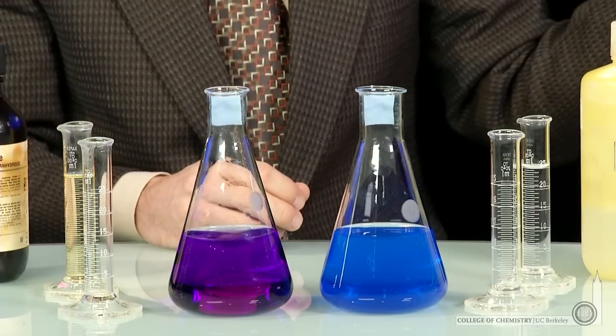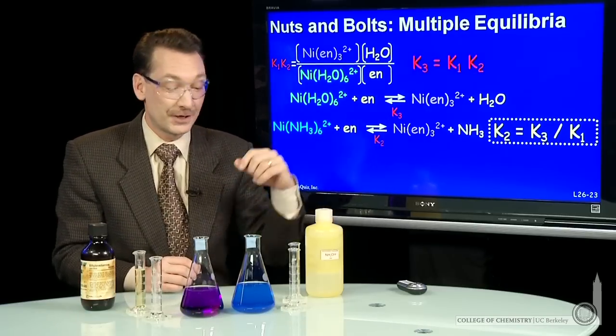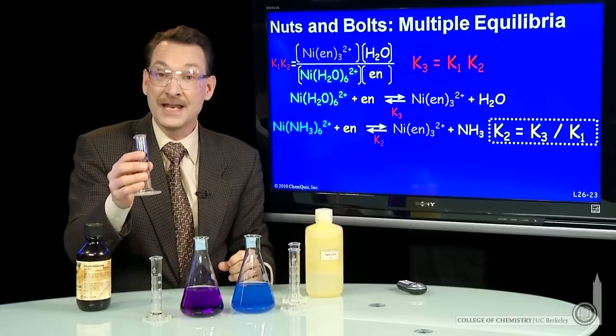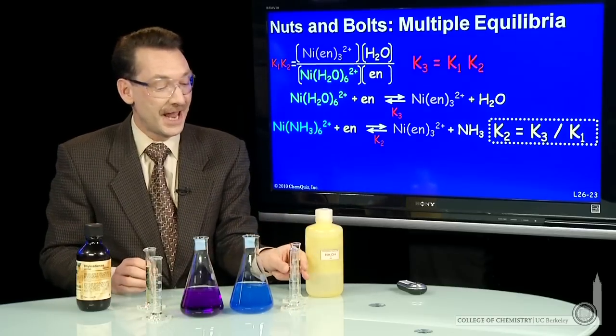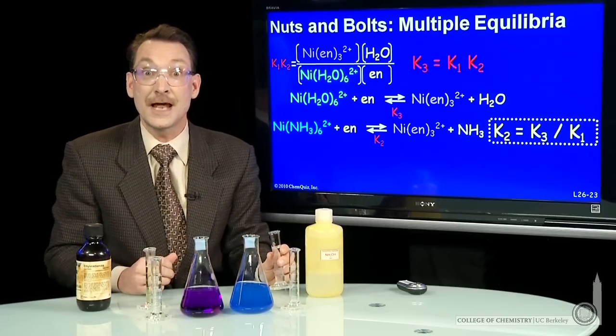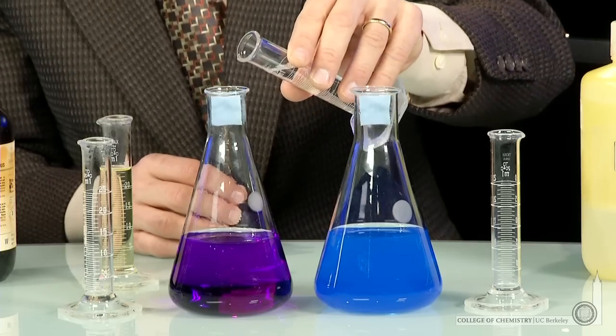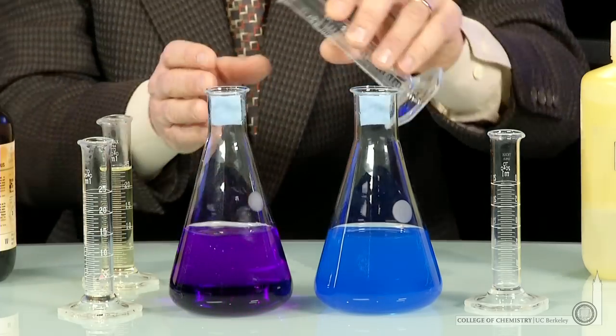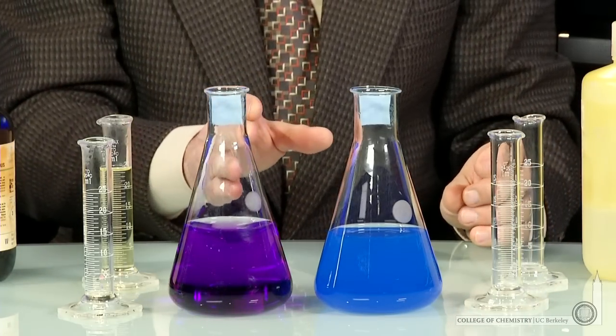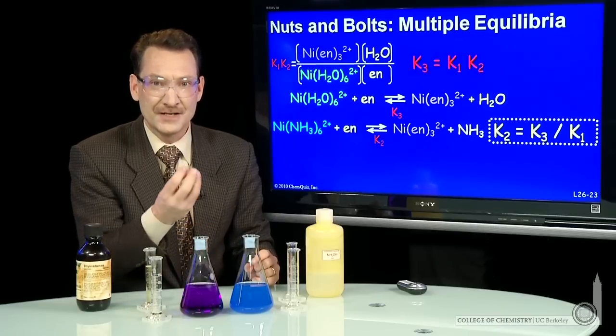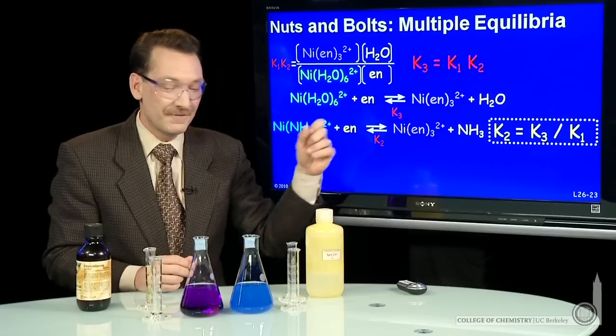The question is, which binds more strongly, ethylenediamine or ammonia? Which K is larger, K3 or K1? We can figure that out by adding ethylenediamine to the ammonia complex and ammonia to the ethylenediamine complex. See which one wins out. Here's ammonia being added to the ethylenediamine complex. No color change there. That says it looks like ethylenediamine is the stronger binder. This K is going to be bigger than 1, favoring ethylenediamine.